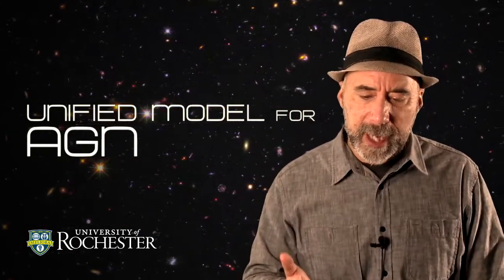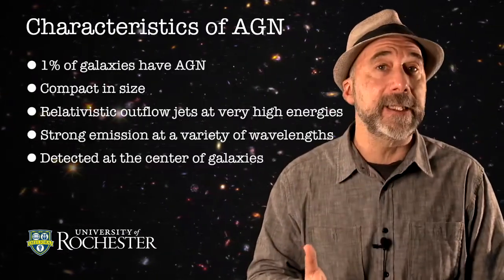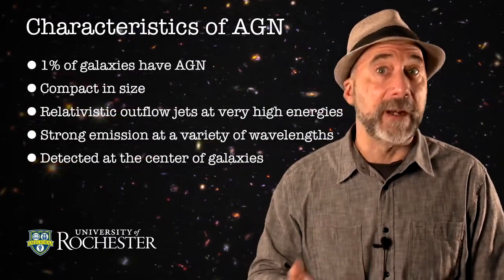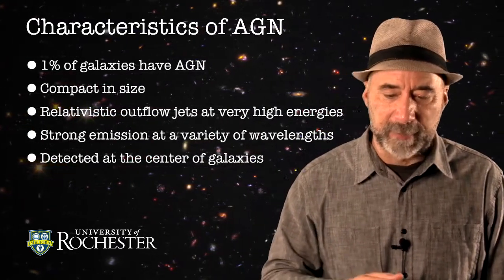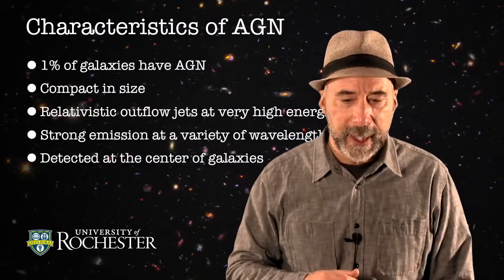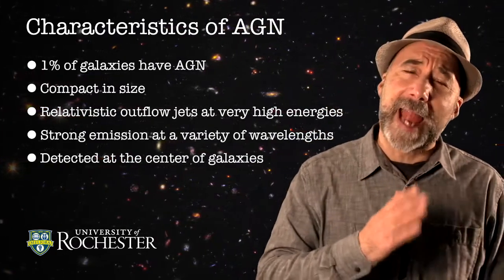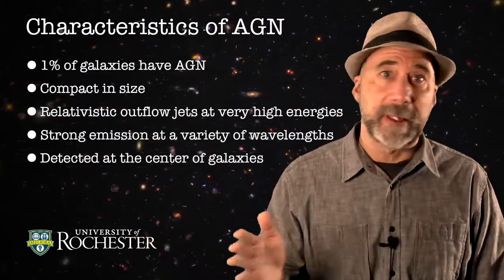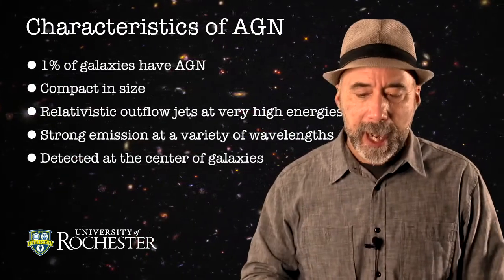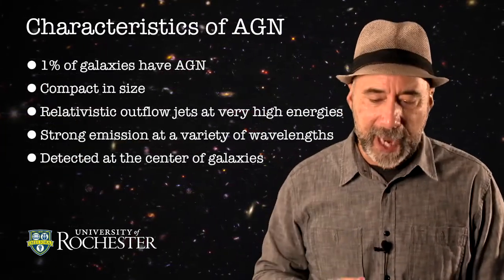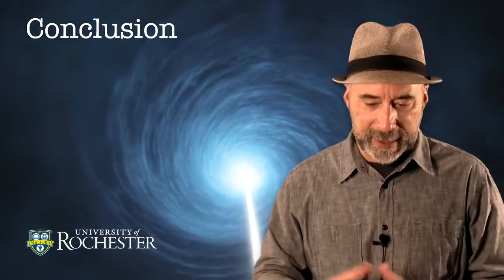The important thing to understand is what are the general characteristics of AGN. They're compact in size. They tend to generate outflows at very high velocities, even close to the speed of light, so they're very relativistic. They emit light at a variety of wavelengths — everything from radio to X-rays. And they tend to be at the center of galaxies. Since the jets are relativistic, the beams of gas are relativistic, they must be coming from something that is itself relativistic.